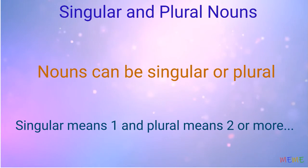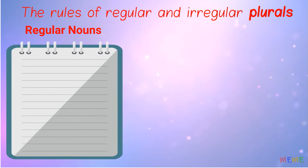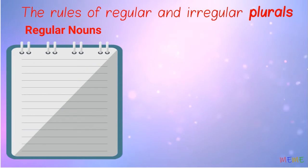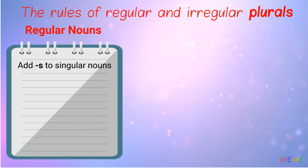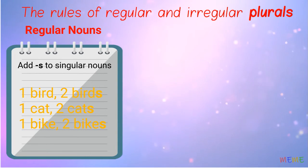The rules of regular and irregular plurals. For most nouns, plurals are made by adding -s at the end of singular nouns. One bird, two birds. One cat, two cats. One bike, two bikes.